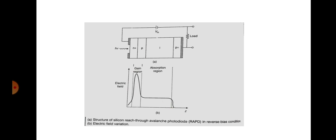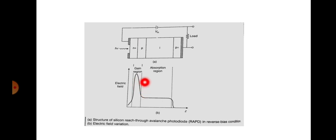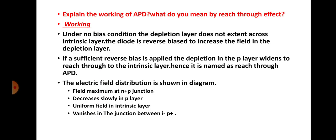The electric field distribution in the avalanche photodiode shows that at the n-plus p junction the electric field is maximum, since it is a reverse-biased junction and the depletion region is at its widest. The electric field reduces as we move away from this junction, and in the intrinsic layer the electric field is constant throughout. At the junction between the intrinsic and p-plus layer, the electric field reduces to zero.